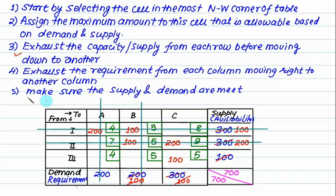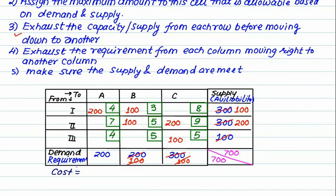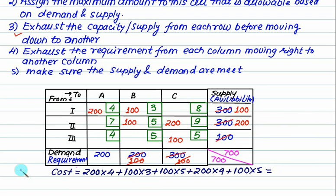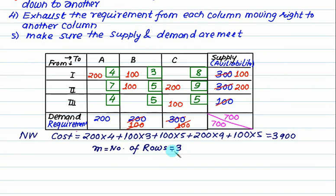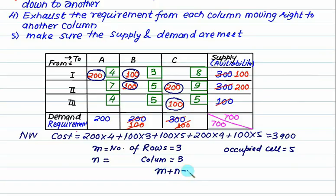Step 5: check the allocations. In column A demand is 200, column B demand is 200, column C demand is 300. Check supply: 200 plus 100 equals 300; 100 plus 200 equals 300; and 100. All steps are completed. Following the North-West Corner rule, check occupied cells: 1, 2, 4, and 5 — that is 5 occupied cells. Check m plus n minus 1: 3 plus 3 minus 1 equals 5. Since occupied cells equals 5, this is the initial basic feasible solution.